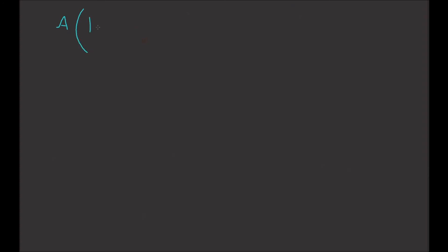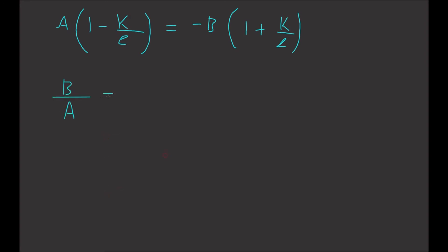Carrying through the algebra, we get A times (1 minus K over L) equals minus B times (1 plus K over L). Taking B divided by A, we get minus (1 minus K over L) divided by (1 plus K over L).